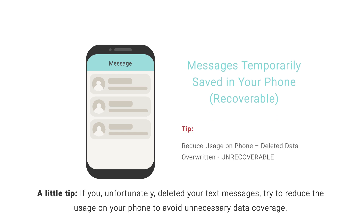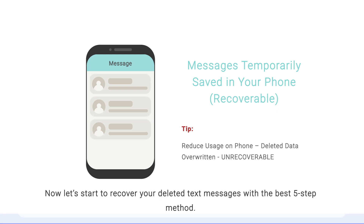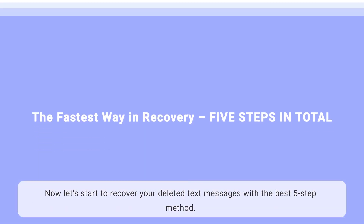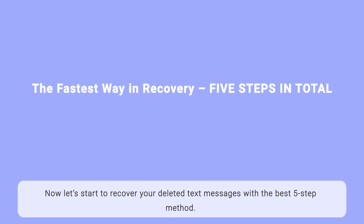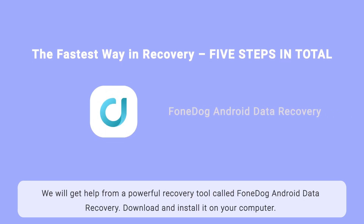A little tip: if you unfortunately deleted your text messages, try to reduce the usage on your phone to avoid unnecessary data coverage. Now let's start to recover your deleted text messages with the best 5-step method. We will get help from a powerful recovery tool called PhoneDog Android Data Recovery. Download and install it on your computer.